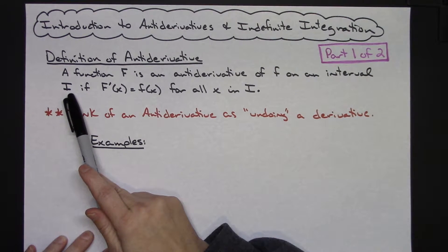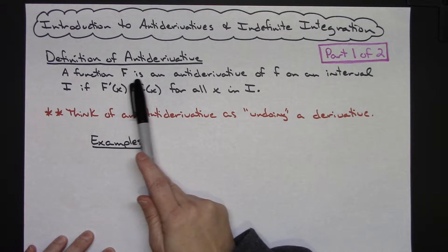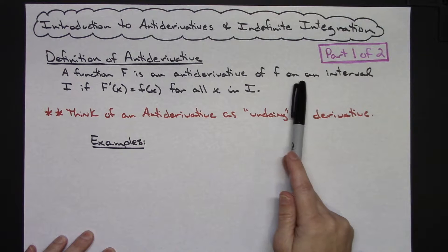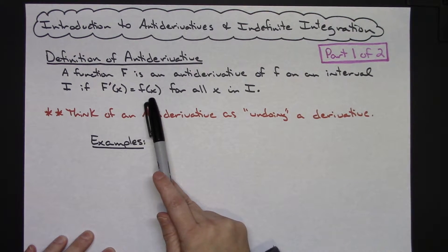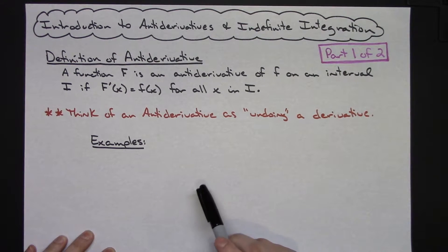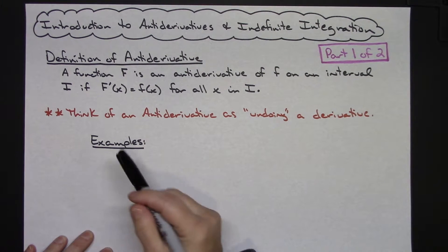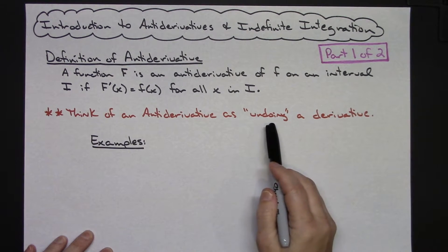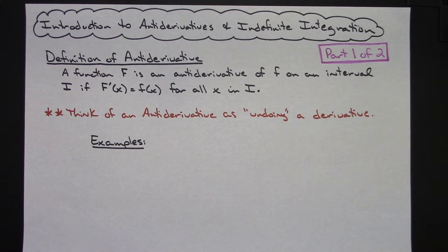But for a formal definition here, the definition of an antiderivative is a function capital F - notation means a lot here - a function capital F is an antiderivative of little f on an interval i if capital F prime of x is equal to f of x for all x in i, or in that interval. So yes, the formal definition might not totally make sense. But basically you can just get the idea of an antiderivative by thinking of it as undoing your derivative.